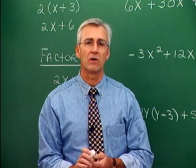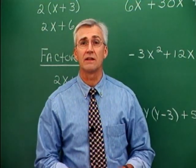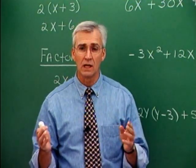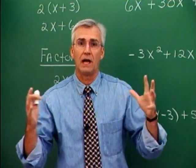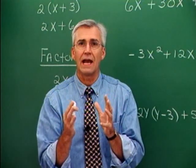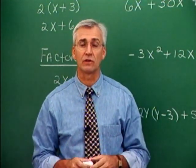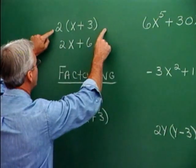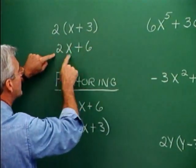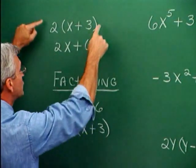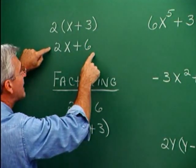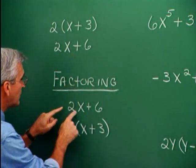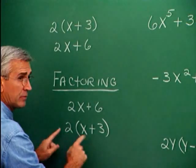In this section, we'll be examining a process which is effectively the inverse of multiplication. It is the process by which we take a multiplied form and write it as the product of factors, and the process is called factoring. In the past, we have taken a situation like this and multiplied 2 times x plus 3 to get 2x plus 6, using the distributive property. The idea in factoring is to perform this operation backwards — to take 2x plus 6 and write it as 2 times x plus 3.